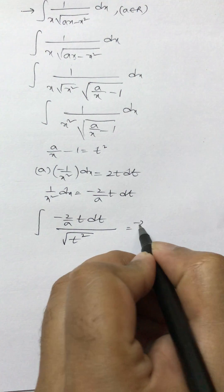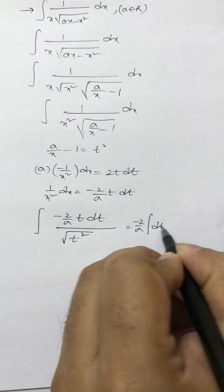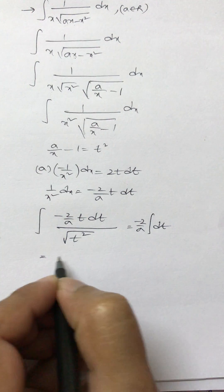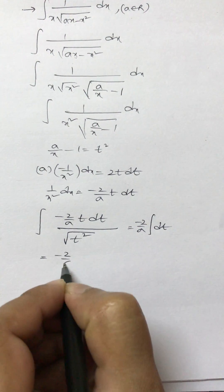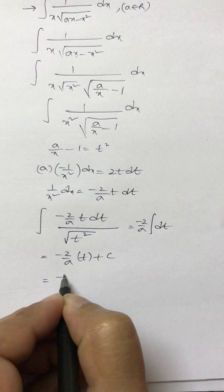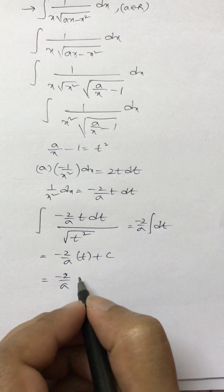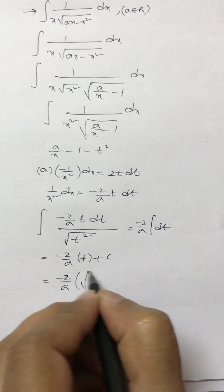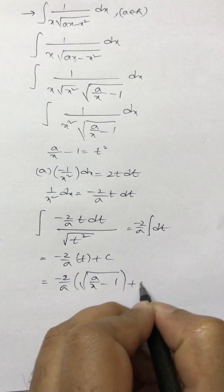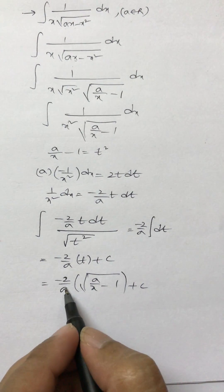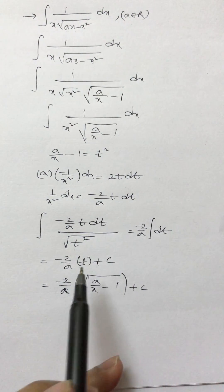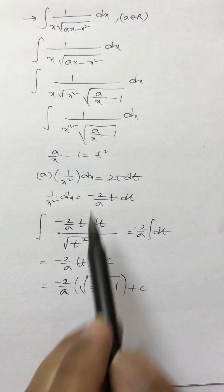Now the integral becomes −2/a · t dt divided by √(t²), which simplifies to −2/a · t + c. Substituting back, t is nothing but √(a/x − 1). So the final answer is −2/a · √(a/x − 1) + c. With this little rearrangement, we are able to solve this problem in an easier manner.